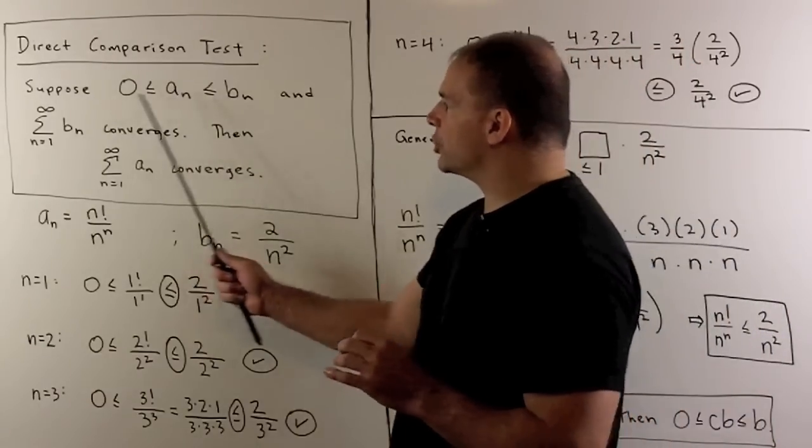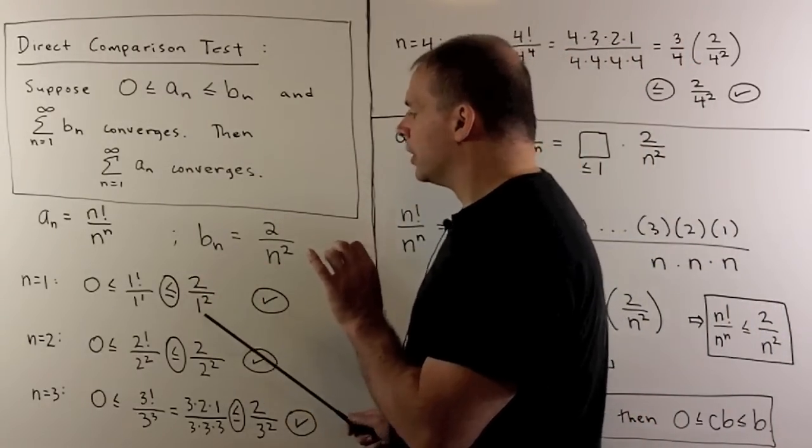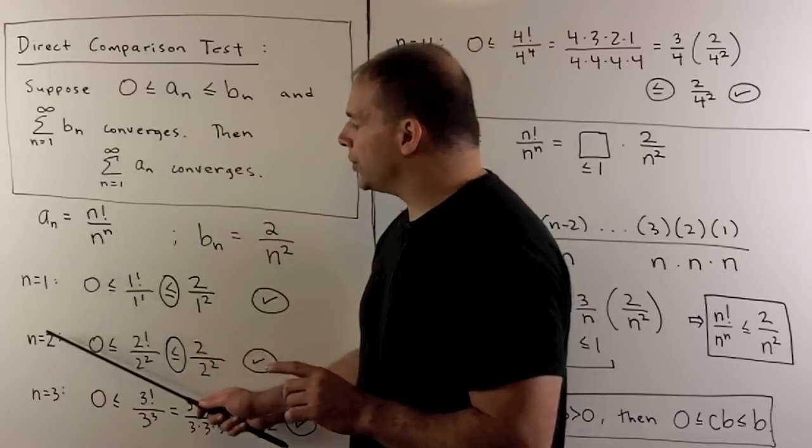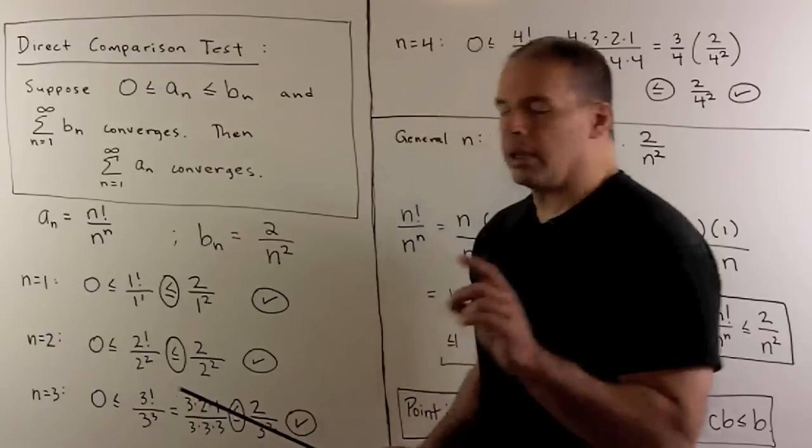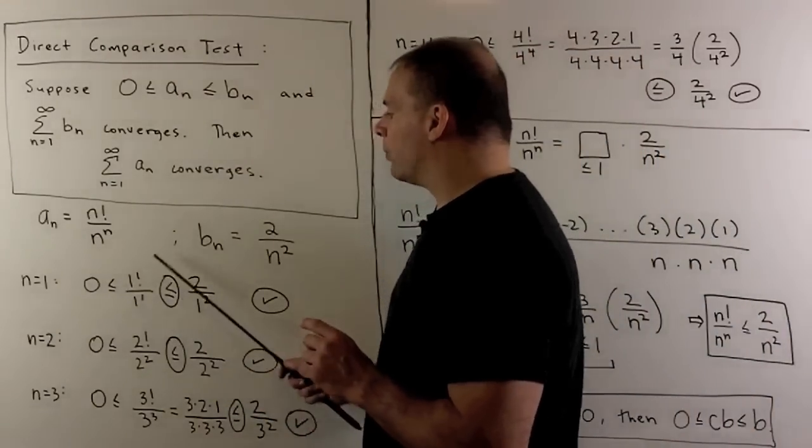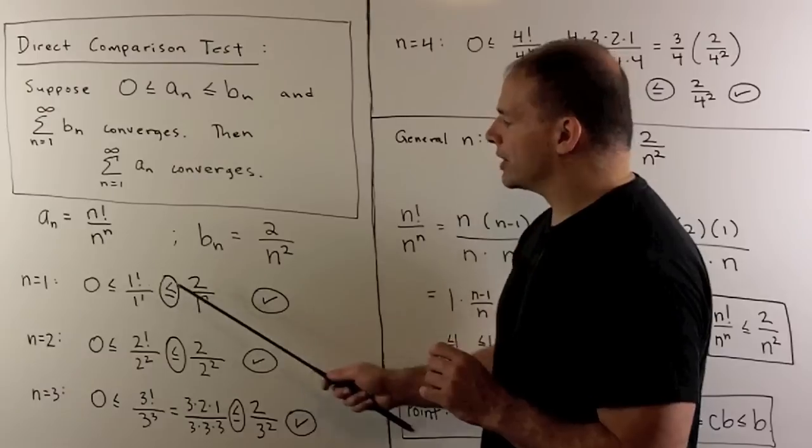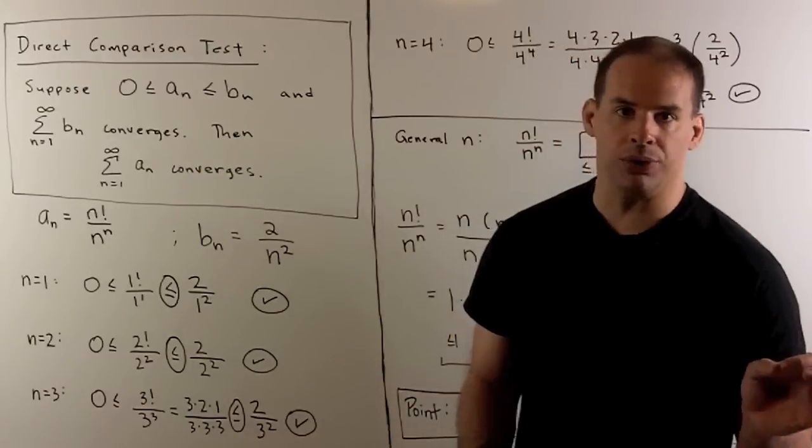Now, let's check the first few n to see if a pattern arises. If we consider n equal to 1, 2, or 3, things aren't so exciting. For instance, if I have n equal to 1, we have 1 factorial over 1 to the 1. Is that less than 2 over 1 squared? 1 is less than or equal to 2, that holds.